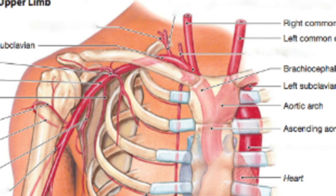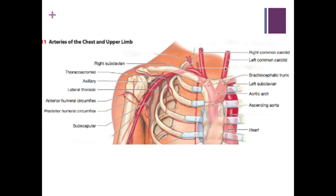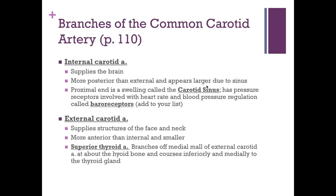Remember: the left common carotid artery and left subclavian come directly off the arch of aorta, whereas the right side comes from the brachiocephalic trunk. Anytime you hear the word 'common' in relation to blood vessels, that should tell you it's going to split into something else.